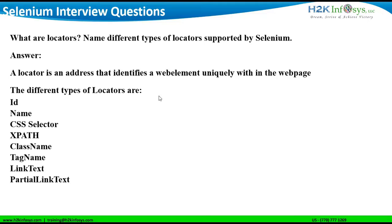Now let us look at the question. The question is: what are locators? Name different types of locators which are supported by Selenium. The question is divided into two parts. The answer to the first part — what are locators — is: a locator is an address that identifies a web element uniquely within a web page. Selenium supports testing on web browsers and web pages. A web page consists of web elements, each with a unique address, and these locators are used to identify a web element uniquely.